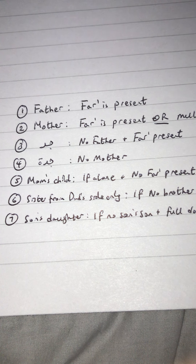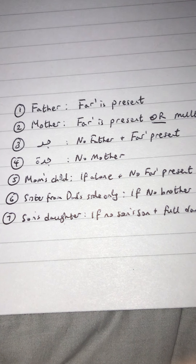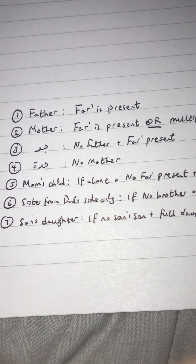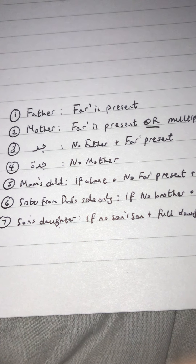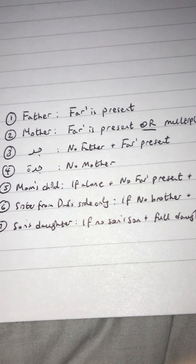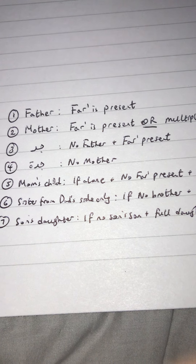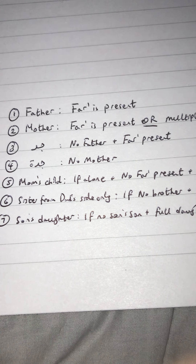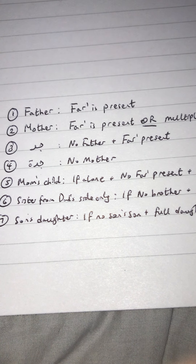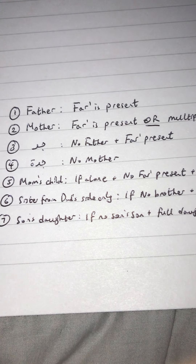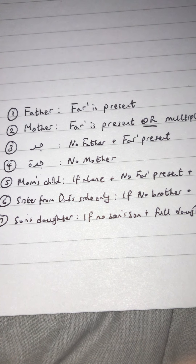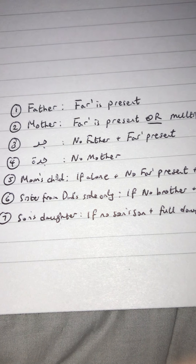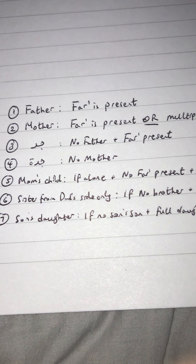Those who can potentially inherit a sixth are seven individuals, as you can see on the screen. The first individual is the father. The father inherits a sixth as long as there is a farah warith — a progeny for the deceased — present, and there is a father or mother present. Then in this case the father will inherit a sixth.